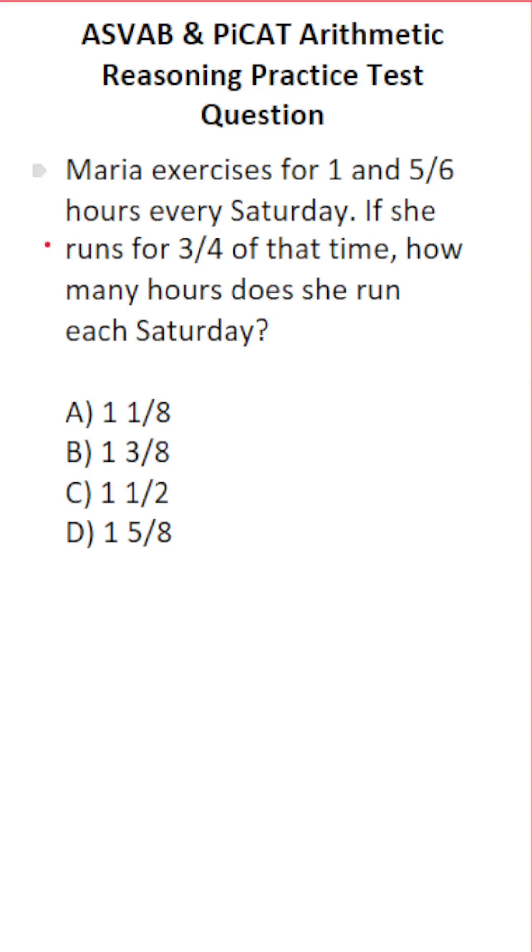So this one's very simple. We got to find three-fourths of that time. That time refers to the total time she spends exercising, notably 1 and 5/6 hours. So we're going to do 1 and 5/6, three-fourths of that time. This word 'of' means multiply. So to get our answer, we're going to do 1 and 5/6 times 3/4.